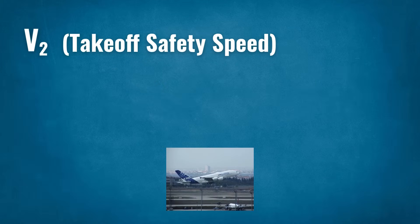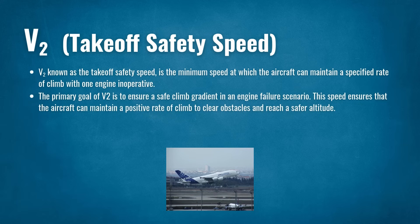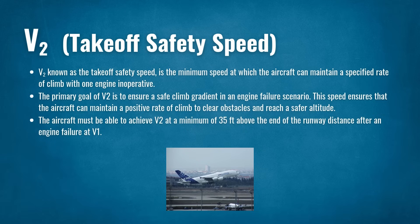V2, known as the Takeoff Safety Speed, is the minimum speed at which the aircraft can maintain a specified rate of climb with one engine inoperative. The primary goal of V2 is to ensure a safe climb gradient in an engine failure scenario. This speed ensures the aircraft can maintain a positive rate of climb to clear obstacles and reach a safer altitude. The aircraft must be able to achieve V2 at a minimum of 35 feet above the end of the runway distance after an engine failure at V1.